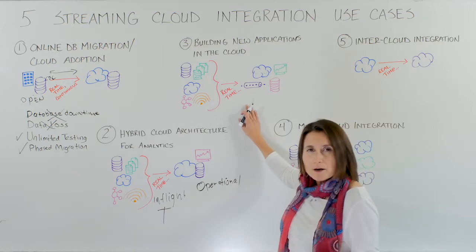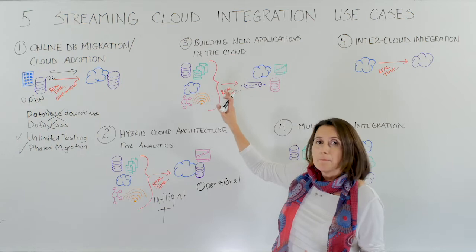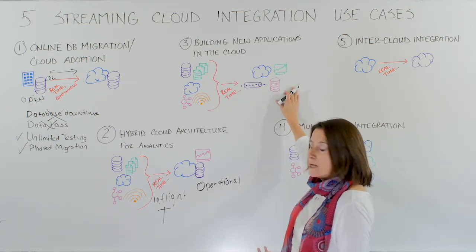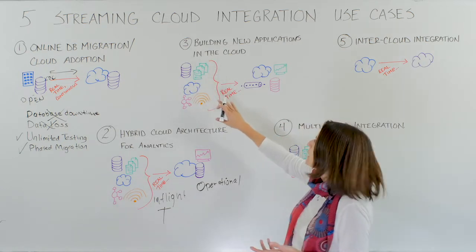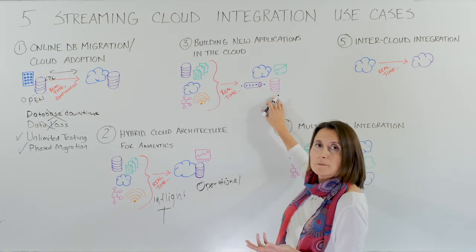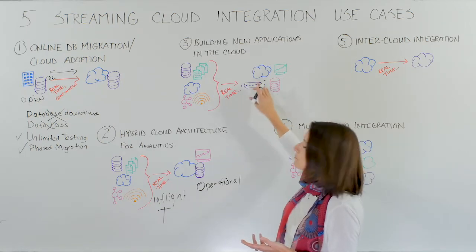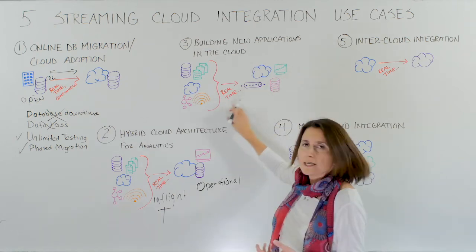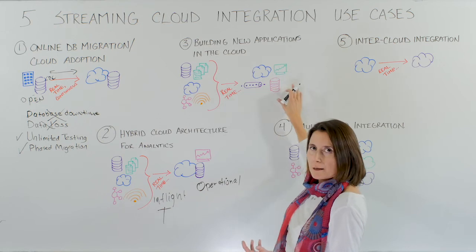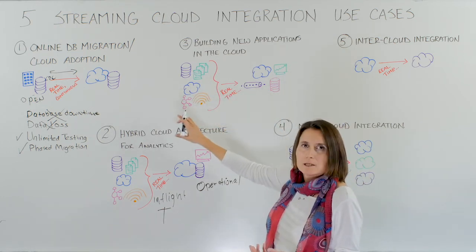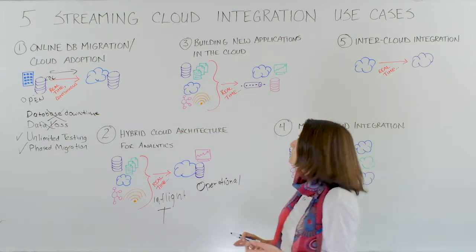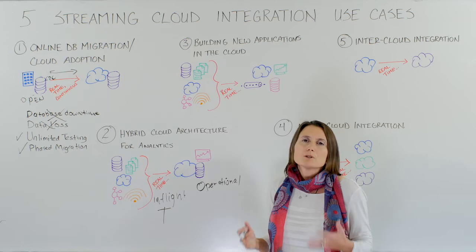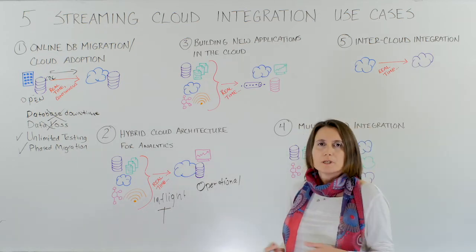The third use case is part of a hybrid cloud architecture. You might be building new applications in the cloud and still need data from your enterprise data sources. By moving this diverse set of data in real time to your cloud messaging systems, cloud databases, or storage solutions, you are able to easily build modern cloud applications that move your business forward. You can make better use of these cloud applications with a real-time bridge between your existing data center and your new cloud environment.